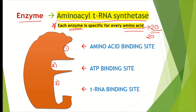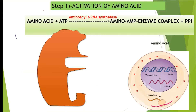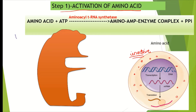The first step of charging of transfer RNA is activation of amino acids. There are around 20 different kinds of amino acids present in the cytoplasm in an inactive state. Each amino acid, before it is attached to a specific transfer RNA, is activated by the specific activating enzyme, which is the aminoacyl-tRNA synthetase.